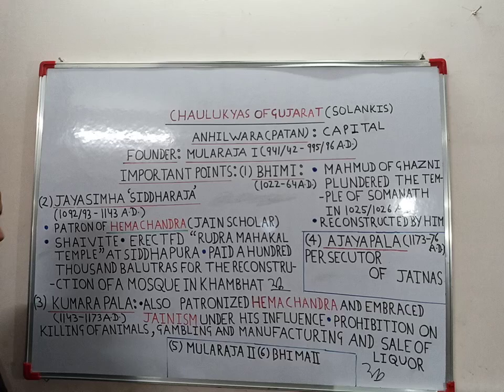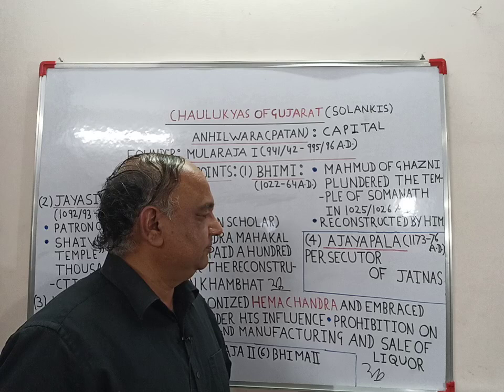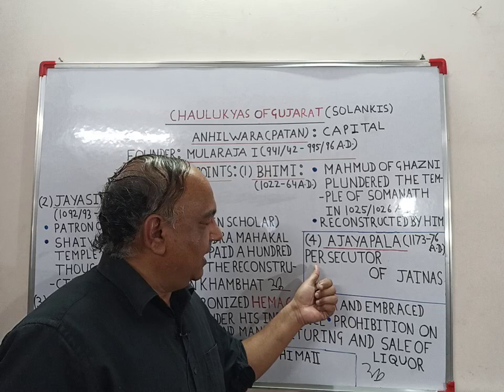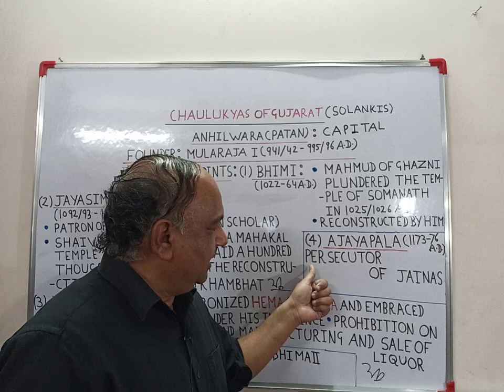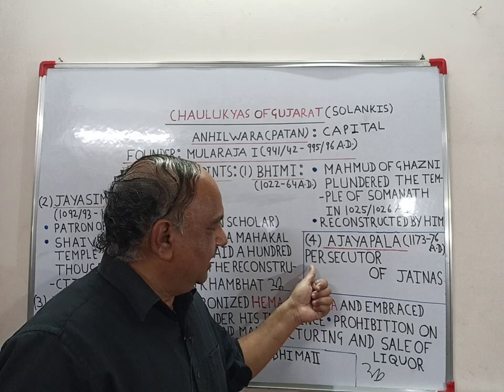The next ruler of this dynasty was Ajaypal. According to Jain chronicles, he is called a persecutor of Jains.